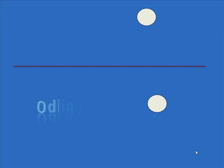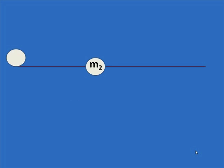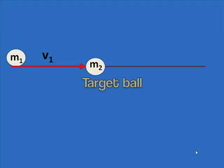This is called an oblique collision. The balls do not hit directly head-on, but rather slightly off-center and then move off at angles. The incident ball, m1, is the one that is moving initially with velocity v1. It has a momentum and hits the target ball, m2, which is initially at rest.